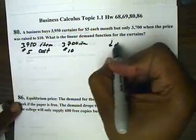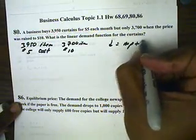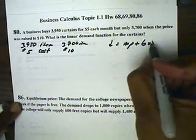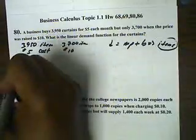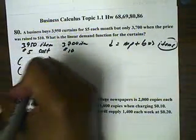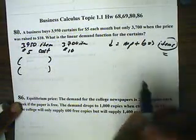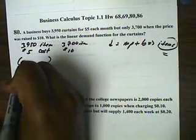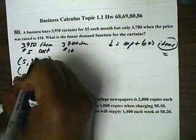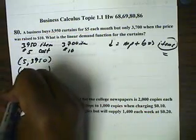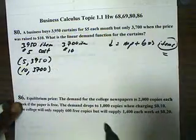We want a demand function. The output of a linear demand function is going to be items. That means when we create our points, the y part is going to be items. So, if it costs $5, the items will be 3,950. If the cost is $10 as an input, the items will be 3,700.